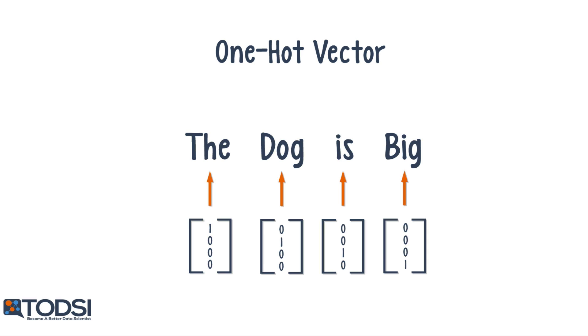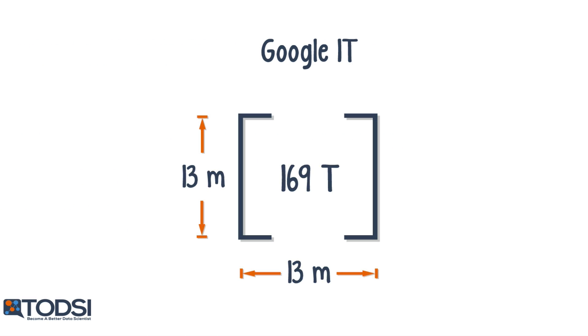As a real-world example, the Google 1T corpus has a vocabulary of over 13 million words. To store these words as one-hot vectors, we would need 13 million vectors, each of size 13 million, which comes out to over 169 trillion values.